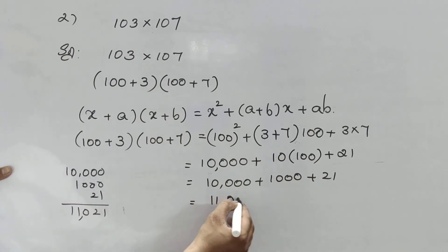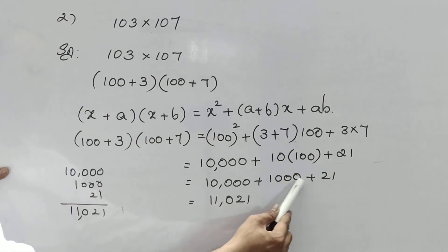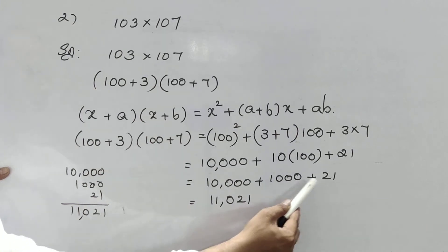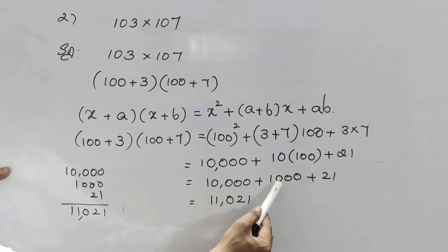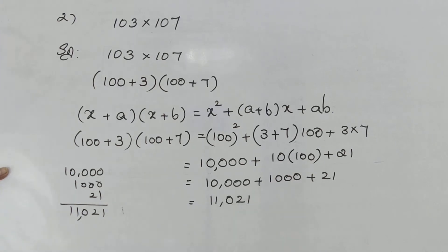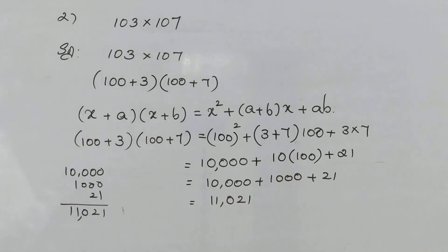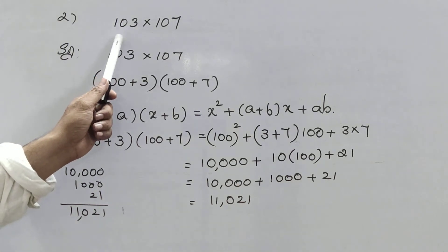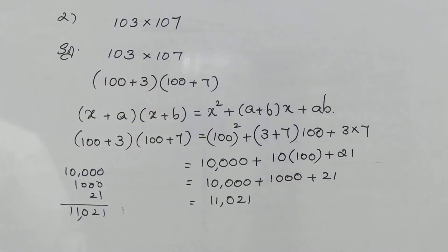That means 11,000 and 21. You can add like this directly. So 11,021 is the solution for 103 into 107 without using direct multiplication.